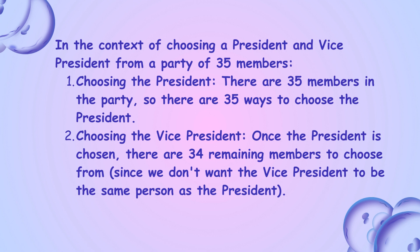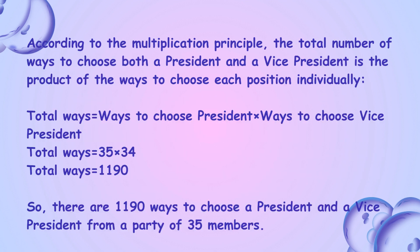Choosing the vice president: once the president is chosen, there are 34 remaining members to choose from, since we don't want the vice president to be the same person as the president. According to the multiplication principle, the total number of ways to choose both a president and a vice president is the product of the ways to choose each position individually. Total ways equals 35 times 34, so there are 1,190 ways to choose a president and a vice president from a party of 35 members.